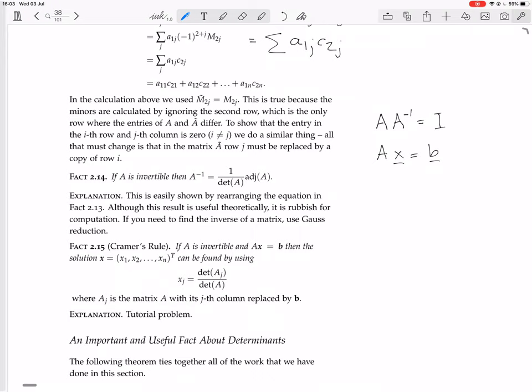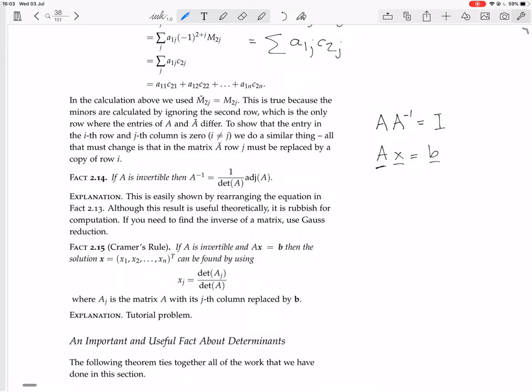You Gauss reduce until this A becomes in row echelon form or becomes identity, and then if you reduce it until it becomes identity, effectively what you've done is you've, now if you reduce it until A becomes identity, you'll have got to this stage. Effectively what you're doing in that case is multiplying both sides by the inverse, even though maybe you didn't know that. Of course, sometimes this A is not invertible.